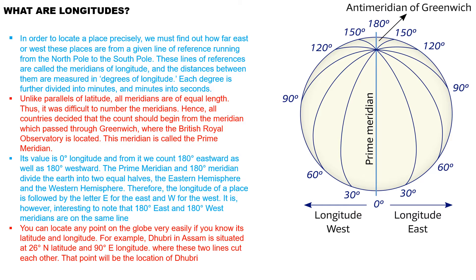Since all meridians are of equal length, it was difficult to number the meridians. Therefore, one meridian was chosen as the reference meridian. Its value is 0 degree longitude. From it, we count 180 degrees eastward as well as 180 degrees westward.